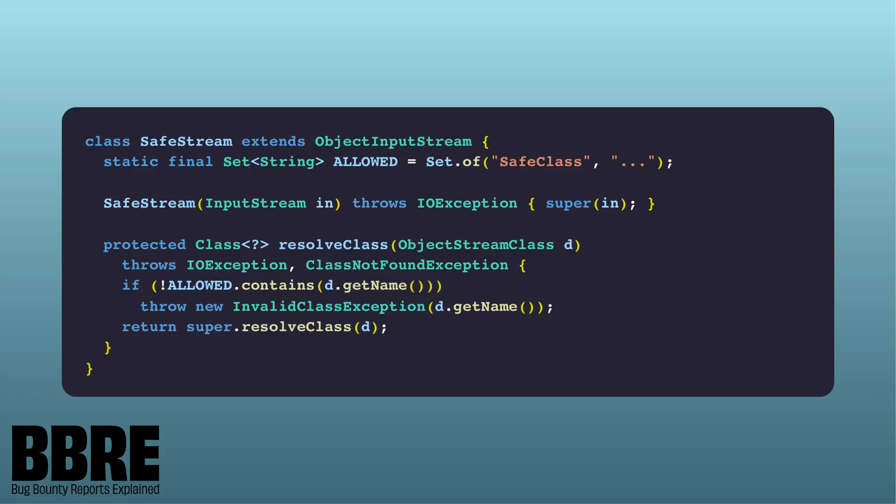Probably there is a fix using LookAhead Object Input Stream. What Java does with this fix is check whether the class is allowed for deserialization or not — it checks the name of the class. If it's not on the allowed list, it is treated as a malicious gadget and deserialization is blocked.